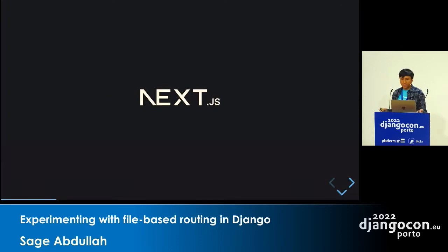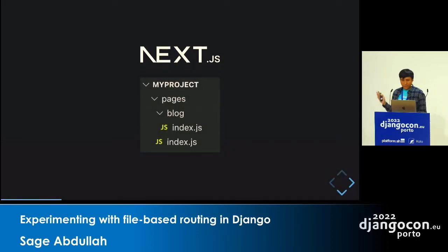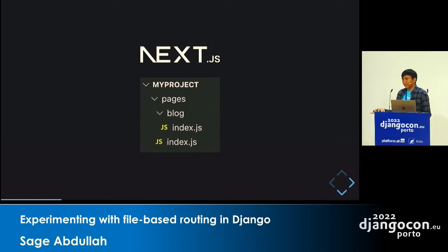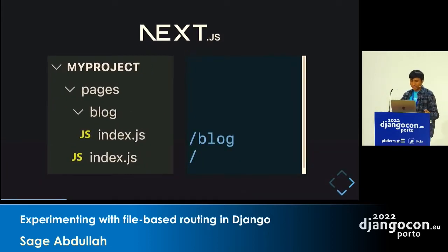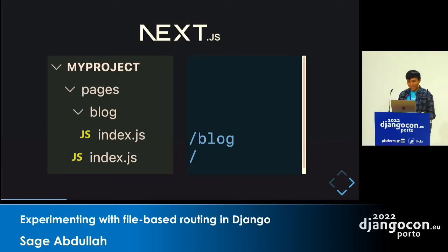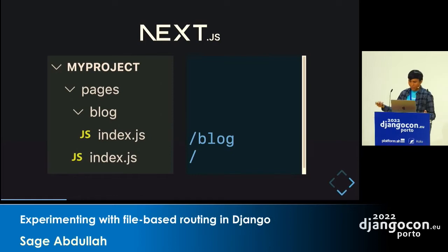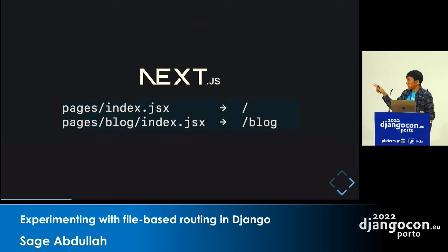I'm going to take Next.js as an example. On Next.js, they call them pages instead of views, and you have this pages directory where you can put your views or pages. For every file named index.js in there, it will create a URL pattern for you. So I have a pages directory that contains an index.js — that will be the root slash. And if there is a subdirectory like blog with an index.js, that will also be mapped to a URL pattern — pages/blog/index becomes /blog.